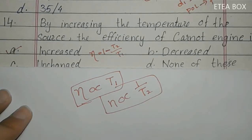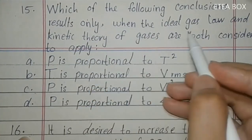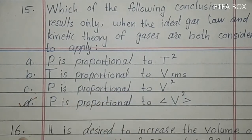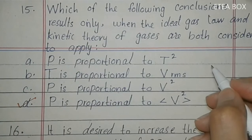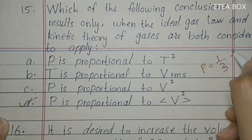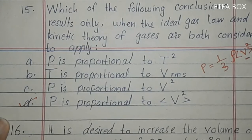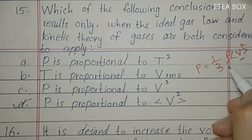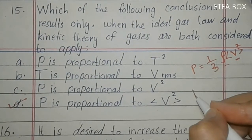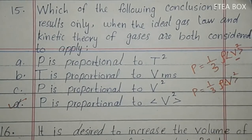Fifteenth MCQ: which of the following results only when both the ideal gas law and kinetic theory of gases are considered together? Here option D is correct. The combined result gives pressure P = (1/3)ρv²(average), where ρ is density. You should memorize this formula.